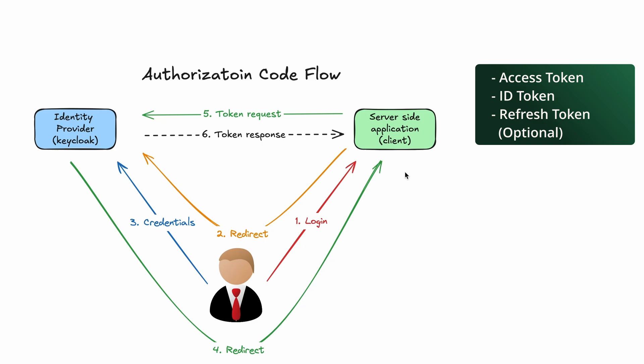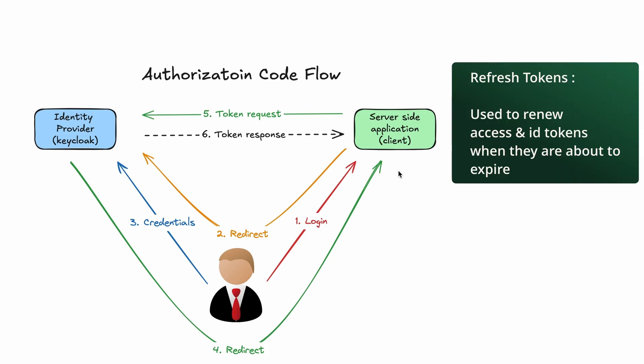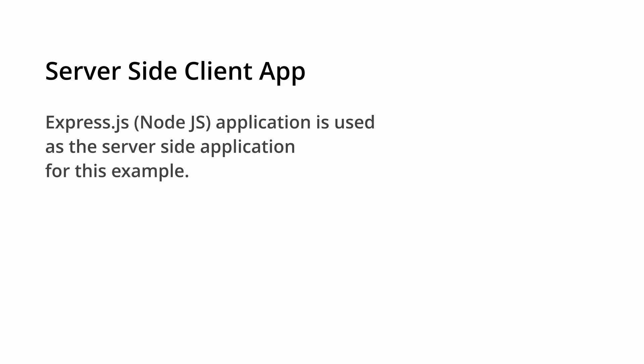As the response for this token request, all the tokens are received by the server-side application: an ID token, an access token, and optionally a refresh token. Refresh tokens are used to renew access and ID tokens when they are about to expire. That's all with the theory — now I'm going to show how to implement this flow using Keycloak. As the server-side client application I'm using a simple Node.js application built with the Express.js framework.